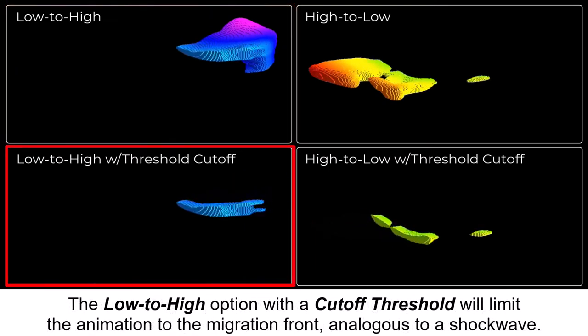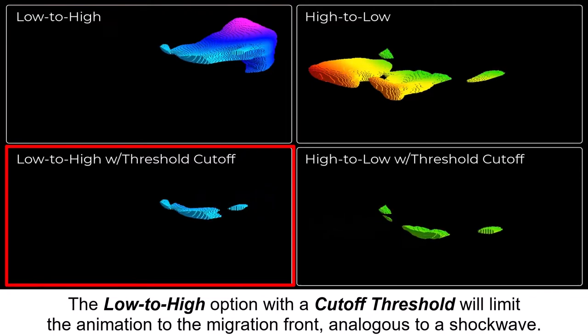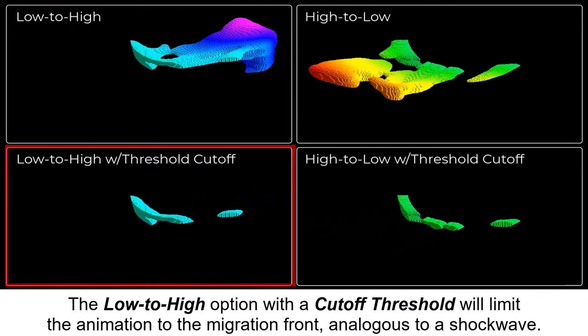The Low-to-High option with a cutoff threshold will limit the animation to the migration front, analogous to a shockwave.